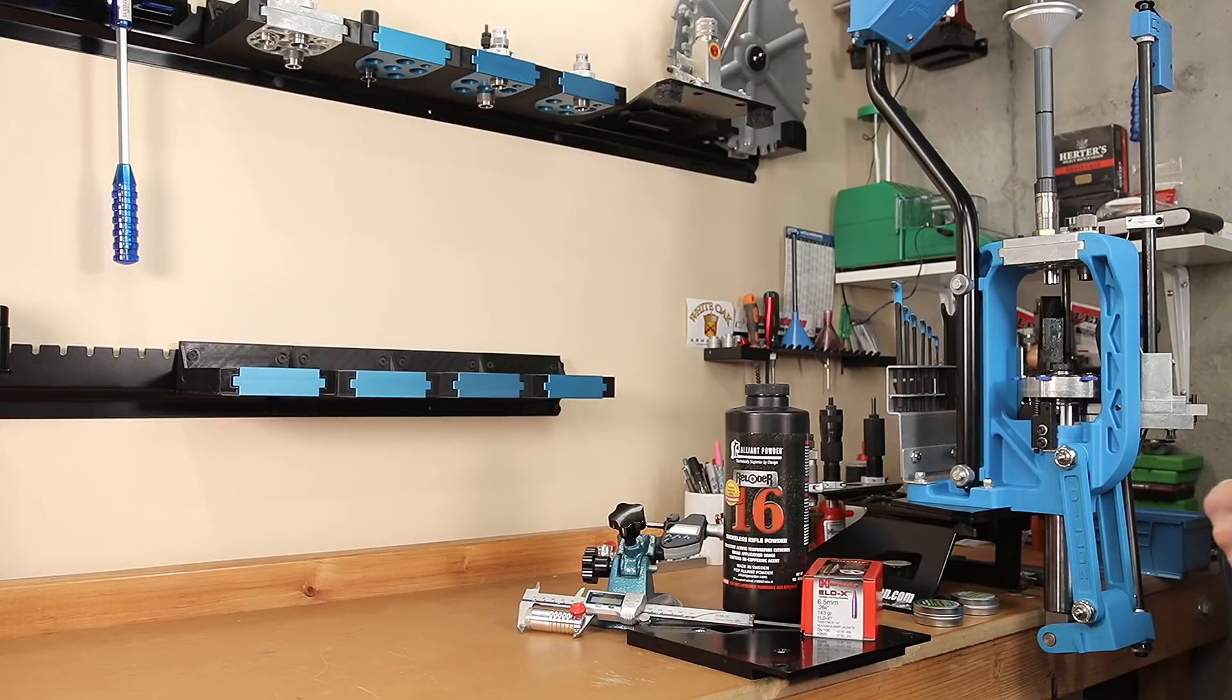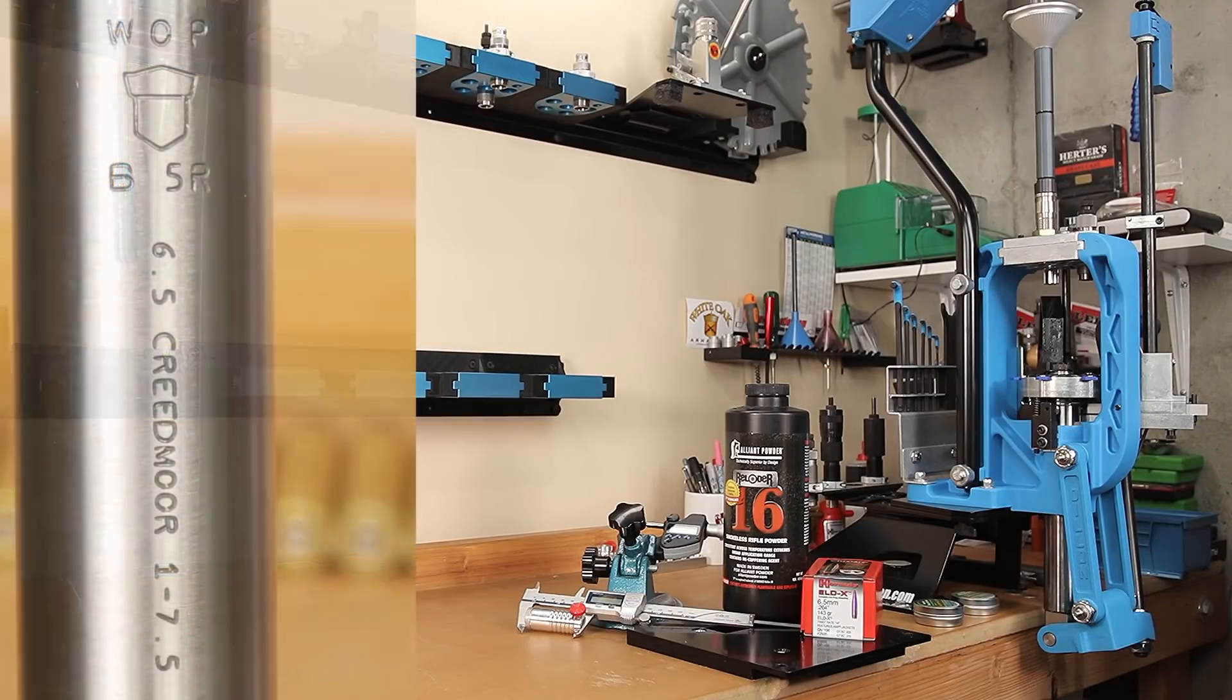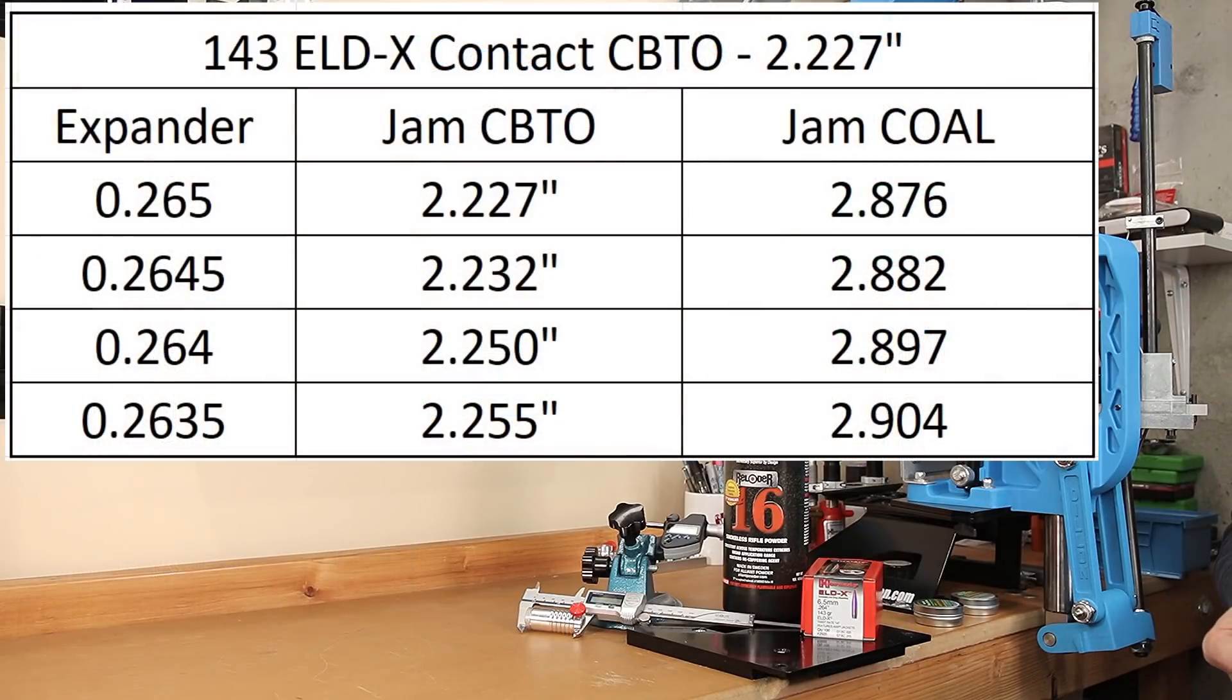The test platform we're using to test today is a Ruger Precision Rifle chambered in 6.5 Creedmoor. It has a 26 inch White Oak Precision barrel. The dimensions that I was able to measure, I'll put on your screen, and you can see that basically contact is going to be a CBTO of about 2.227 inches, which is going to translate to a cartridge overall length of about 2.876. But as you increase neck tension, you can insert that projectile a little bit further in the lands without it sticking.